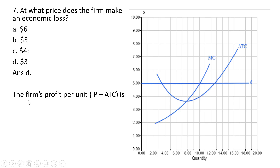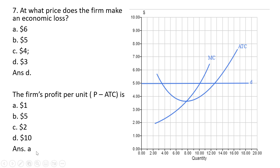Bonus question: the firm's profit per unit, defined as price minus average total cost. At the profit-maximizing output of 10 units, the price is $5 and average total cost is $4. The difference of $1 is profit per unit. Over 10 units, that gives total profit of $10. The answer is choice A.